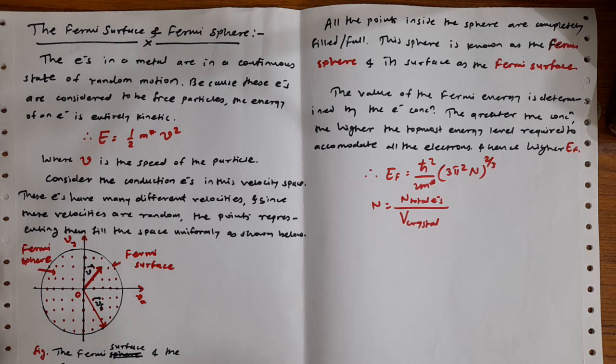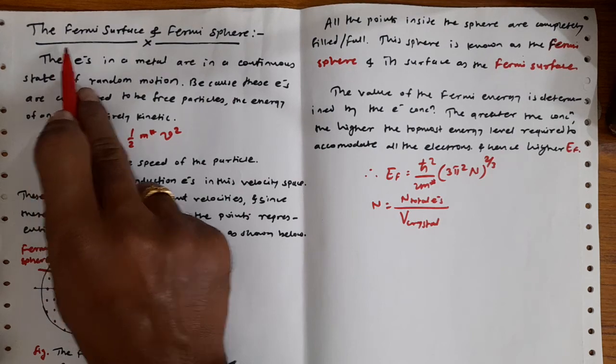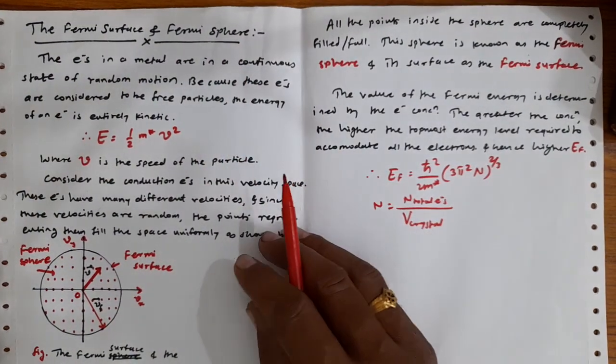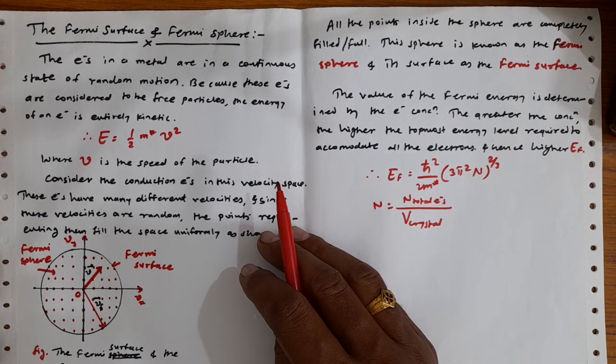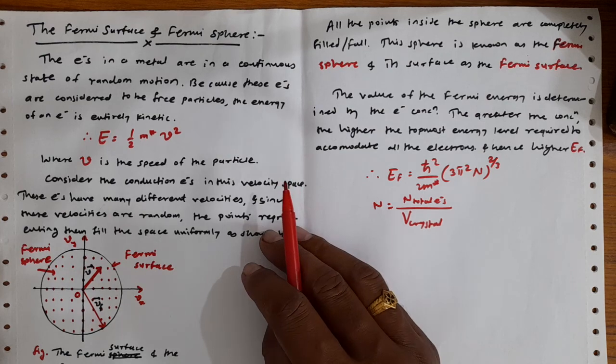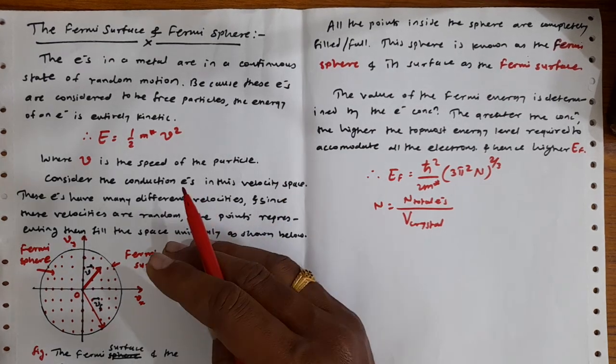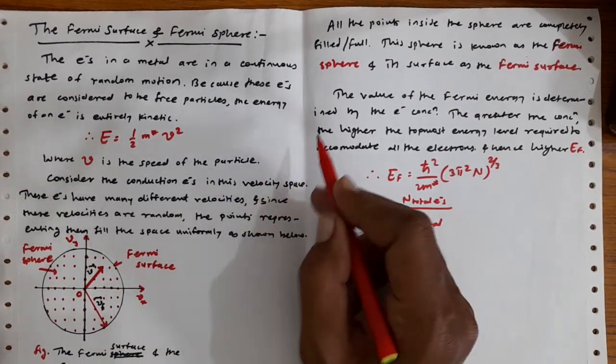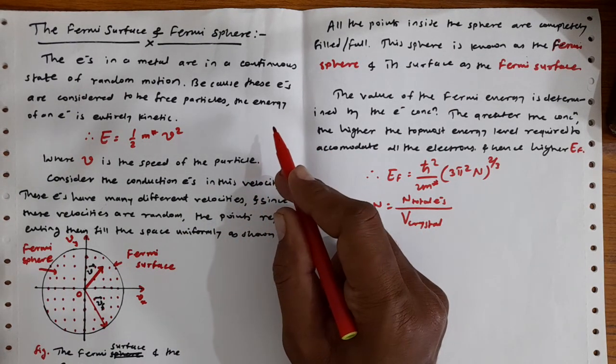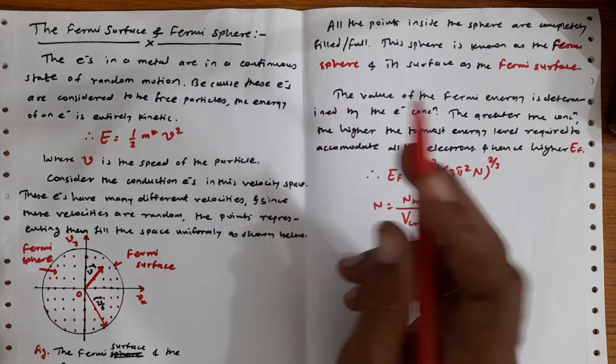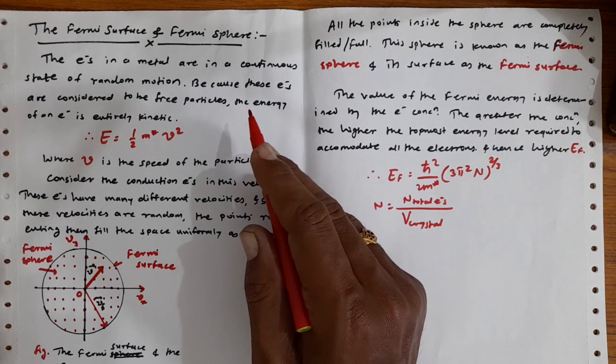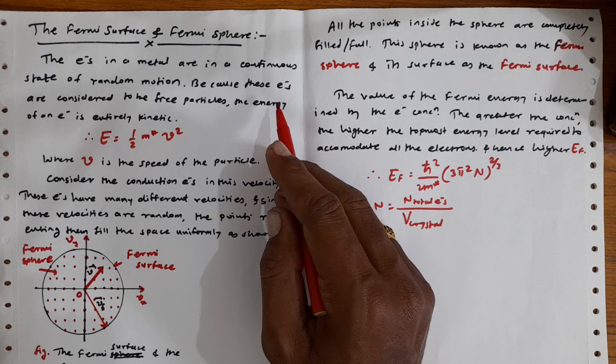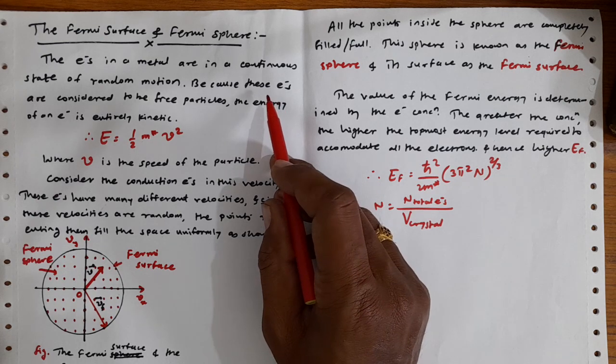Hello friends, today we are going to talk about the Fermi surface and the Fermi sphere. As we know that in a metal there are a large number of free electrons. In these metals, these free electrons are in a continuous state of random motion, randomly moving here and there and colliding with other atoms and changing direction. Because of that they will be having randomness in their motion.